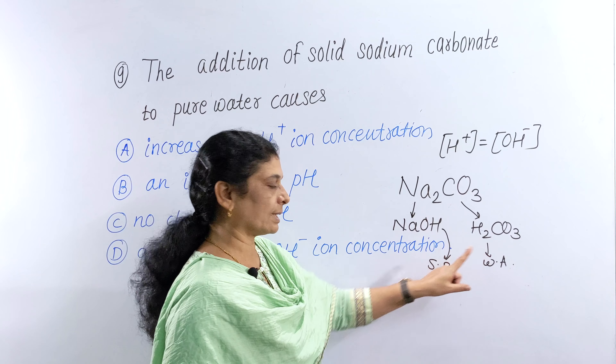A salt of strong acid and strong base is not hydrolyzed. The fourth type — salt of weak acid and weak base — its nature depends on the values of Ka and Kb. If Ka equals Kb, the solution is neutral. If Ka is greater than Kb, the solution is acidic. If Ka is less than Kb, the solution is basic.